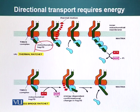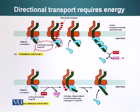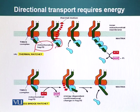The protein moves in and out of the TIM23 complex due to thermal motion. As soon as it enters, a clamp holds the protein from sliding back out into the cytoplasm. Mitochondrial HSP70 acts as this clamp. As the protein keeps coming in, these clamps keep adding and holding the protein in place.